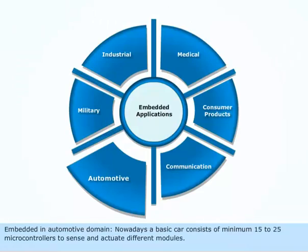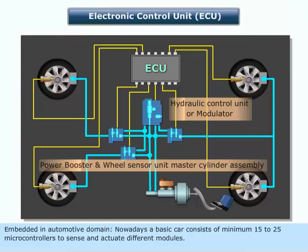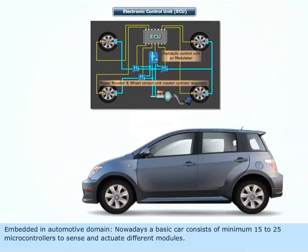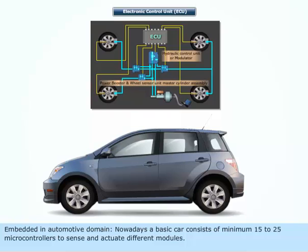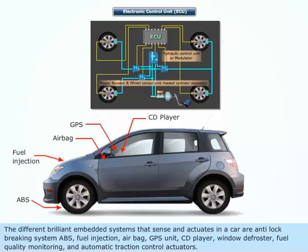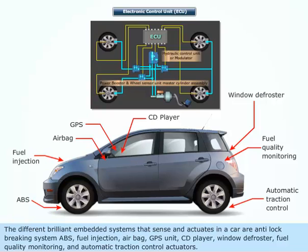Embedded in automotive domain: nowadays, a basic car consists of a minimum of 15 to 25 microcontrollers to sense and actuate different modules. The different embedded systems that sense and actuate in a car are anti-lock braking systems (ABS), fuel injection, airbag, GPS unit, CD player, window defroster, fuel quality monitoring, and automatic traction control actuators.